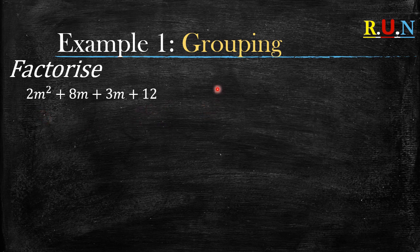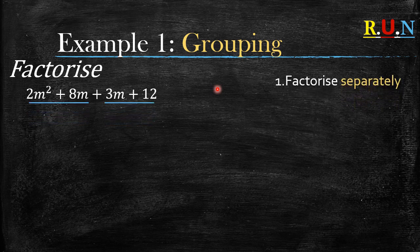So what do we do? Step one: factorize separately. We take the four terms, separate them, then we factorize two terms separately and then we factorize the other two terms.